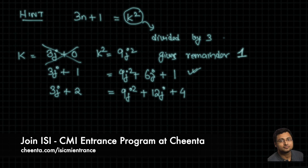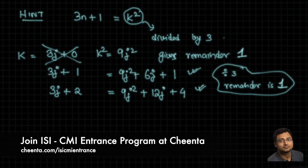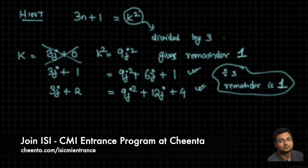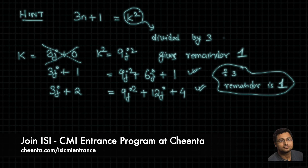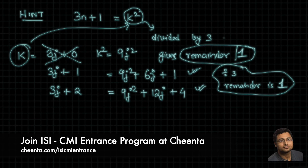In both of the other two cases, dividing by 3 gives remainder 1. If you don't know why that is true, I'd ask you to do an algebraic division by 3 and give a reason in the comments. So k in our case, since its square gives remainder 1, is either 3j + 1 or 3j + 2 — meaning k gives remainder 1 or remainder 2 when divided by 3.